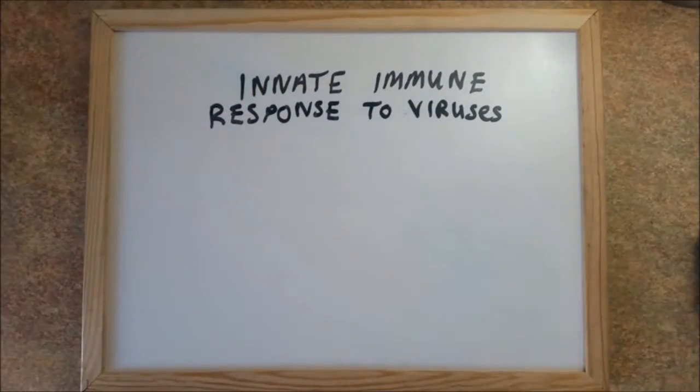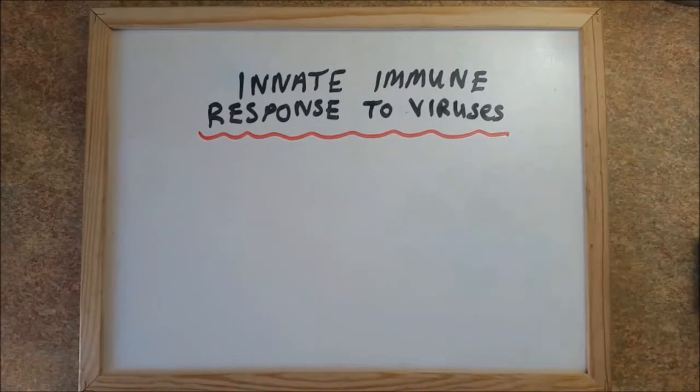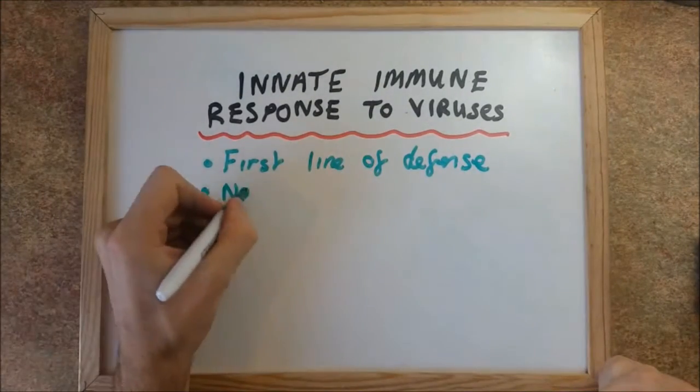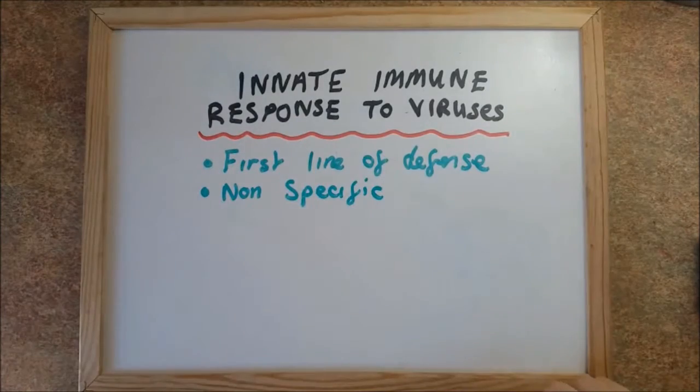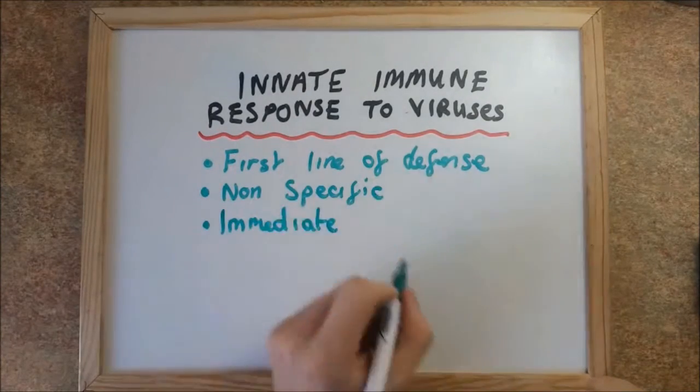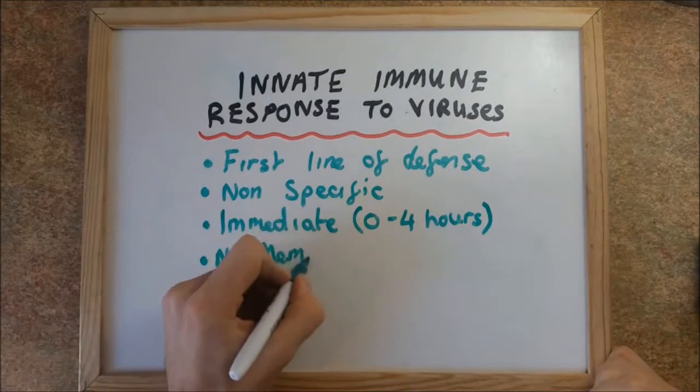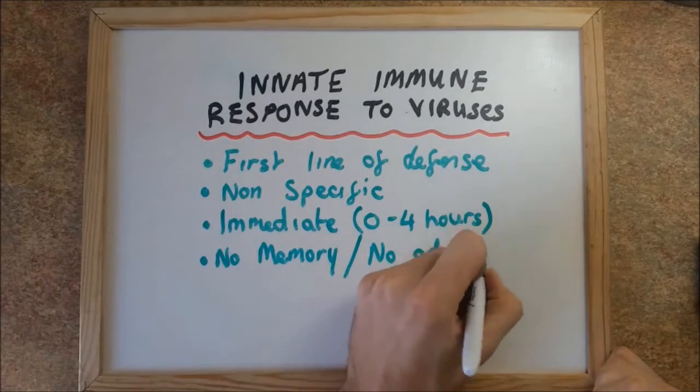This screencast introduces the innate immune response to viruses. The innate immune response is the body's first line of defense to pathogen invasion and is non-specific, which allows for an immediate reaction. This occurs within four hours. Also, the innate immune response has no memory or adaptive mechanisms associated with it.